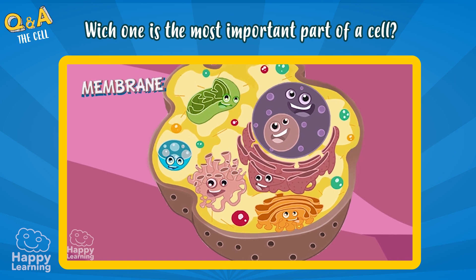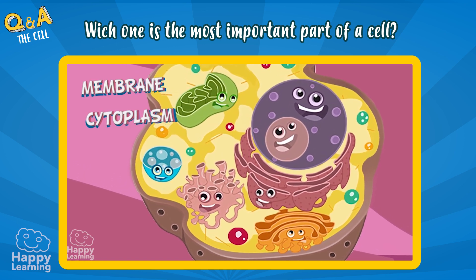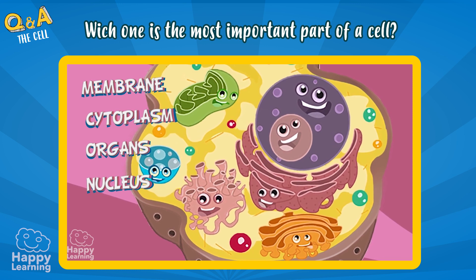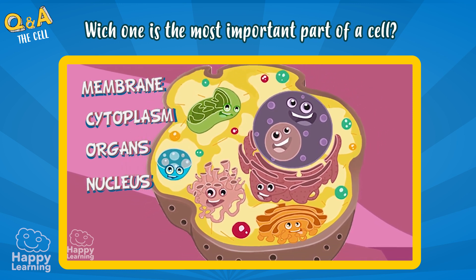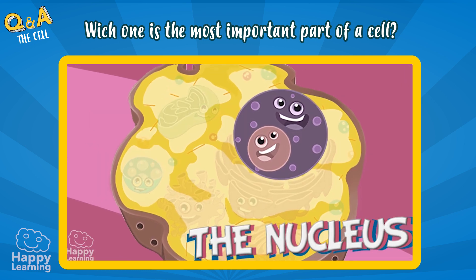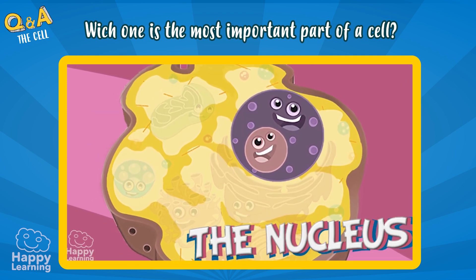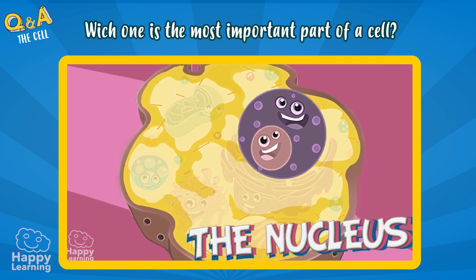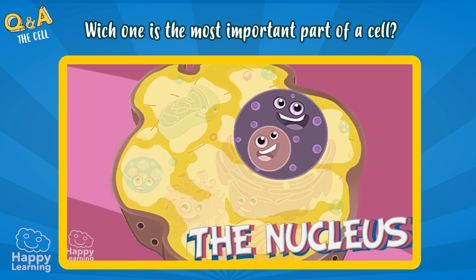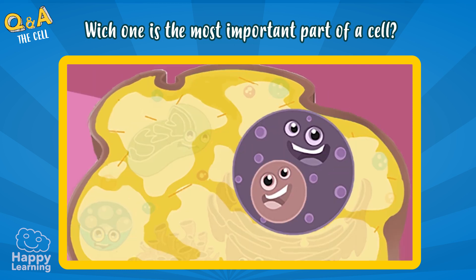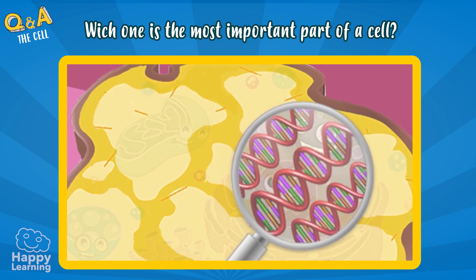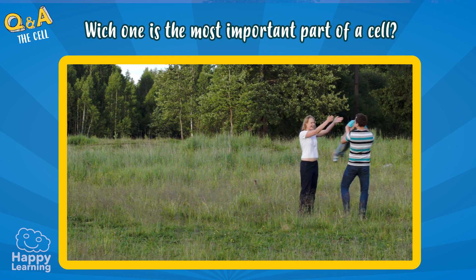In these images, you can see a cell and its most important parts. You need to know that the nucleus is the most important organelle of all. The nucleus is like a brain in a cell and it controls its functions. Within it, there are genes which transmit the hereditary characteristics from parent to offspring.